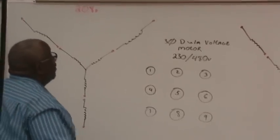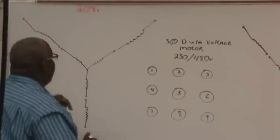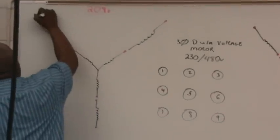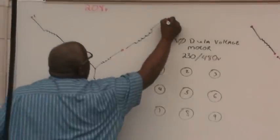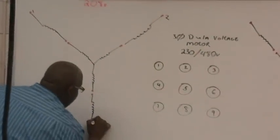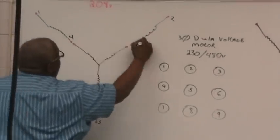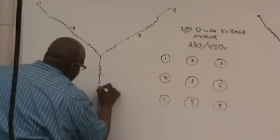First thing I want to do, starting from left to right, I want to number my coils. I'm going to number it one, two, go around to three, come back inside to the first one, four, five, and six.